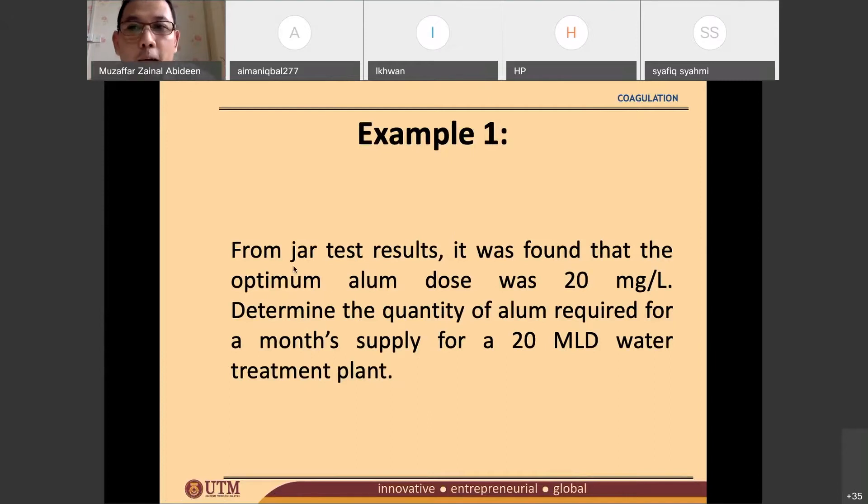From jar test results, it was found that the optimum alum dose was 20 mg per liter. So they have different beakers and somehow the beaker that they add 20 mg per liter give the optimum results. Determine the quantity of alum required for a month's supply for a 20 MLD water treatment plant. So they would like to see or to determine the quantity of alum in a month, and the water treatment plant has a 20 MLD flowrate.